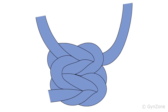The square knot is a stable knot and is used both with an interrupted stitch or at the beginning and end of the continuous suture.